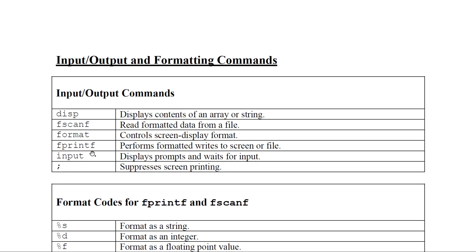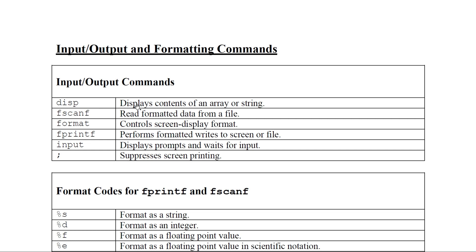Input/output formatting commands: disp displays the content of an array or string. fscanf is used for reading input. format controls the display format — you can use long or short. fprintf is used for writing output. input displays a prompt and waits for user input. Semicolon suppresses screen printing.